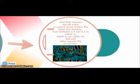Acid rain reduces the pH value of natural water bodies like lakes and streams from between 6.5 and 8.5 to below 4, which is too acidic for fish and other aquatic life to survive.